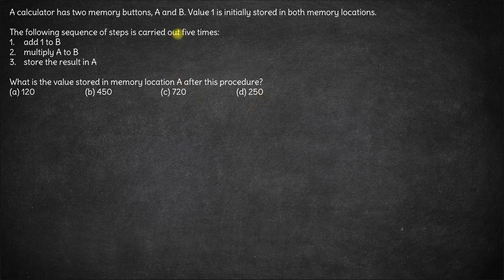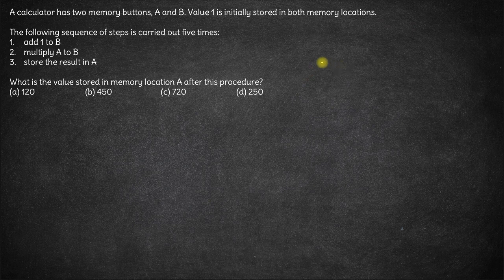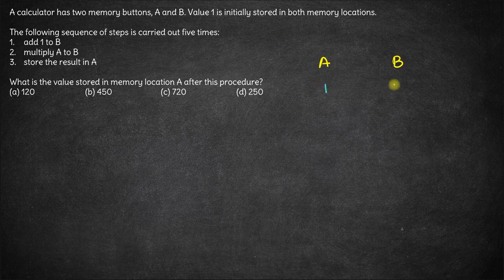Hi, here we have a calculator with two memory buttons, A and B. Initially, the value 1 is stored in both memory locations.